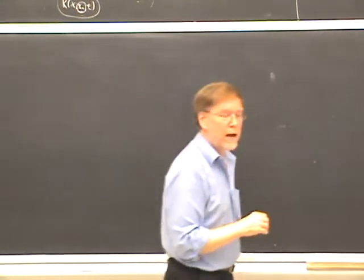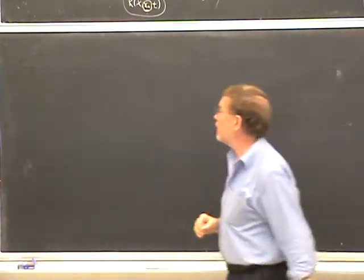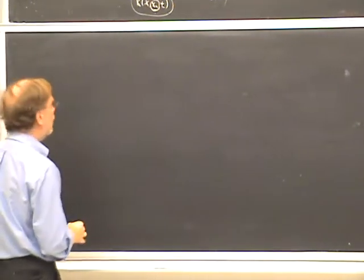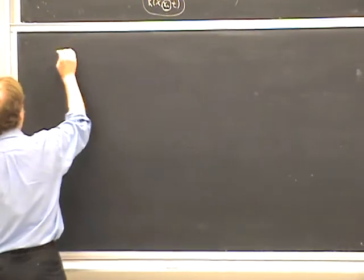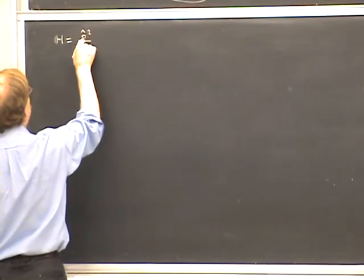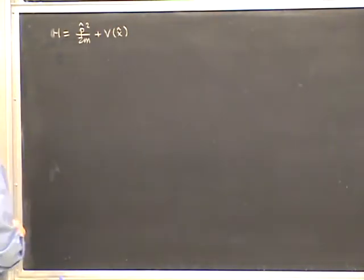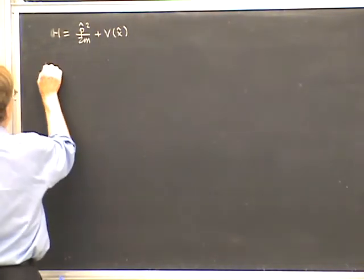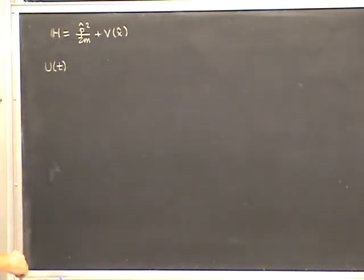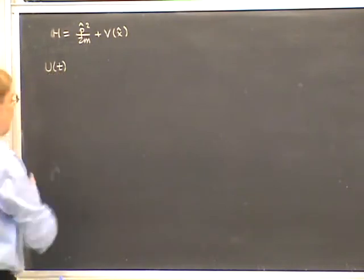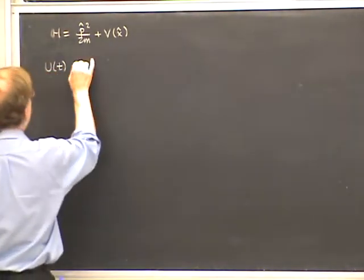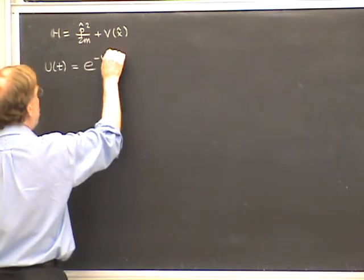Now let me turn to the more general case in which the Hamiltonian also has a potential energy. In that case we can't generally write down an explicit formula for the propagator, but there is a general formula — the path integral — which is the main object I'm going to get to today. So let's let H be P-hat squared over 2M plus V(X-hat) — kinetic plus potential Hamiltonian — and we're interested in the time evolution operator, which is e to the minus iTH-hat over ℏ.